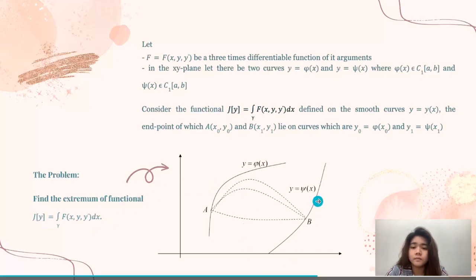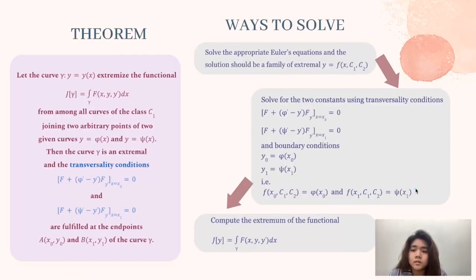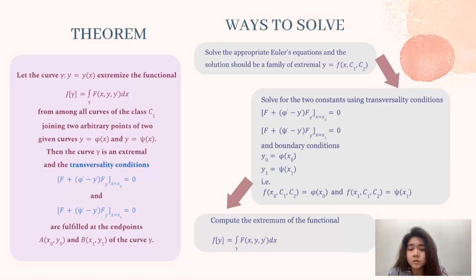Here is the graph for y equals vx and y equals sinx. The theorem states: let the curve y equals y(x) extremize the functional J over curves of class C1 joining two arbitrary points of the two given curves y equals vx and y equals sinx. Then the curve gamma is an extremal, and the transversality conditions are fulfilled at the endpoints (x0, y0) and (x1, y1) of the curve gamma.